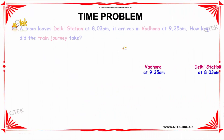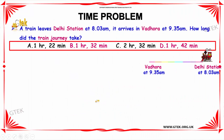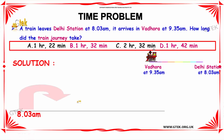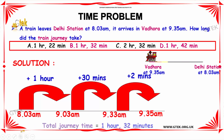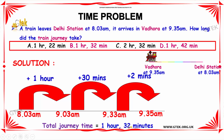The solution for this problem is: from 8:03 AM to 9:03 AM is 1 hour, from 9:03 AM to 9:33 AM is 30 minutes, and from 9:33 AM to 9:35 AM is 2 minutes. By adding all three, we get the total duration as 1 hour 32 minutes.